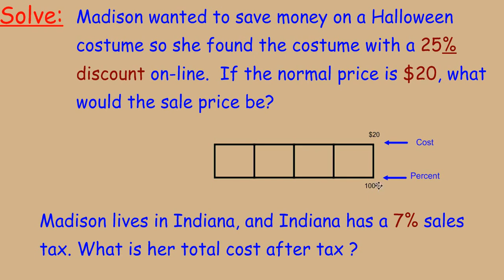We can use the relationship between percents and costs to find other values. 50% is half of 100%, so $20 divided by 2 equals $10. Now, since 25% is half of 50%, we divide again: $10 divided by 2 equals $5. So 25% is equal to $5, and 0% of course equals $0.